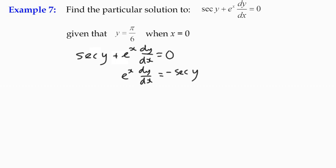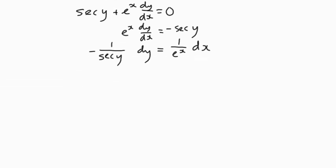Now we can rearrange it the way we normally do, by dividing and multiplying both sides. So if we divide both sides by negative sec y, we're going to have 1 over negative sec y on the left. And if we divide through by e to the x and multiply through by dx, we end up with that. Using our algebraic manipulation, we get an expression where the function of y dy equals the function of x dx.